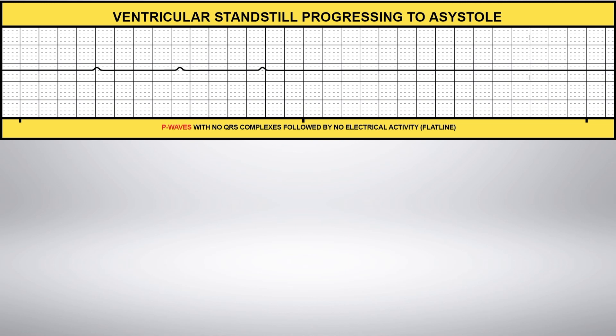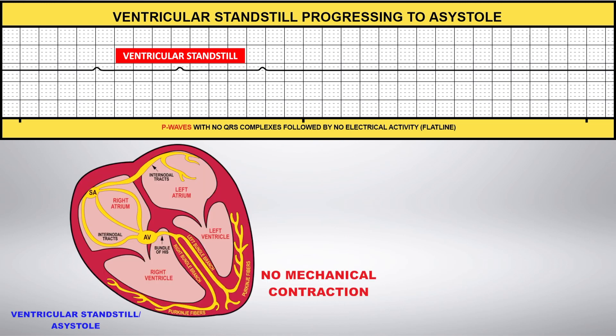Ventricular standstill occurs when you have only atrial depolarization and there is no ventricular depolarization. The P waves are present, but there are no QRS complexes, so there is no pulse.